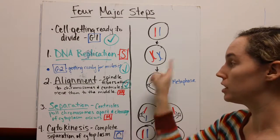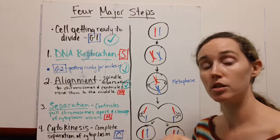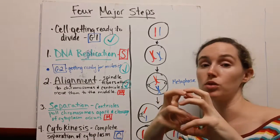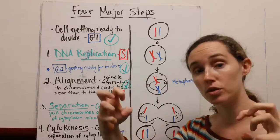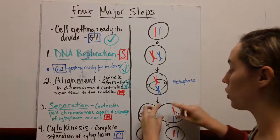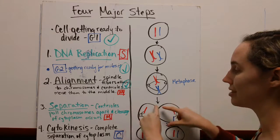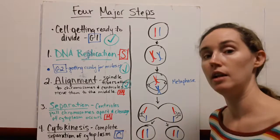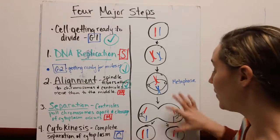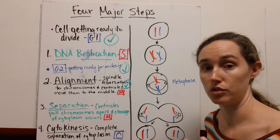Finally, our spindle fibers and centrals start to pull those chromosomes apart. We've got our chromosomes being pulled apart here, and the cytoplasm is going to start to pinch together during the separation phase. This pinching right here is called cleavage.